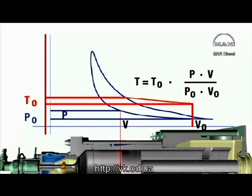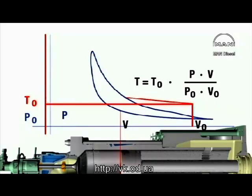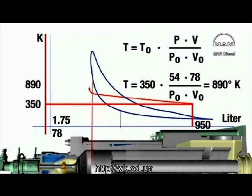The indicator diagram gives us the values that are to be substituted in the equation when computing the temperature. For the top position of the piston, we find the temperature to be about 890 degrees Kelvin.